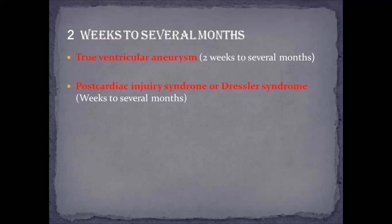From two weeks to several months, the patient may present with true ventricular aneurysm, which is due to outward bulging of the ventricle seen on every contraction. The patient may present with chest pain, murmur, arrhythmia, syncope, or heart failure, or even rupture of the true ventricular aneurysm leading to cardiac tamponade.